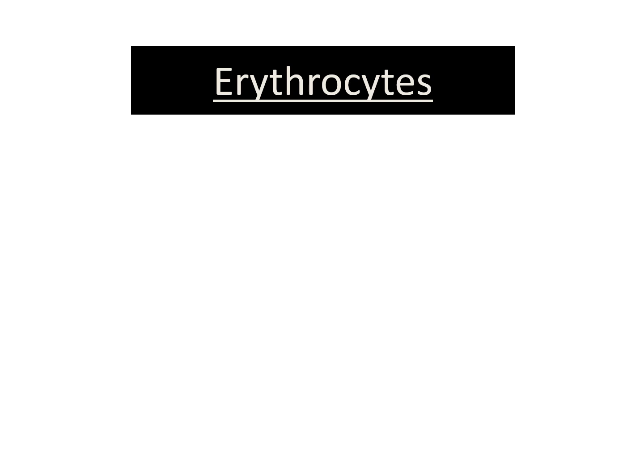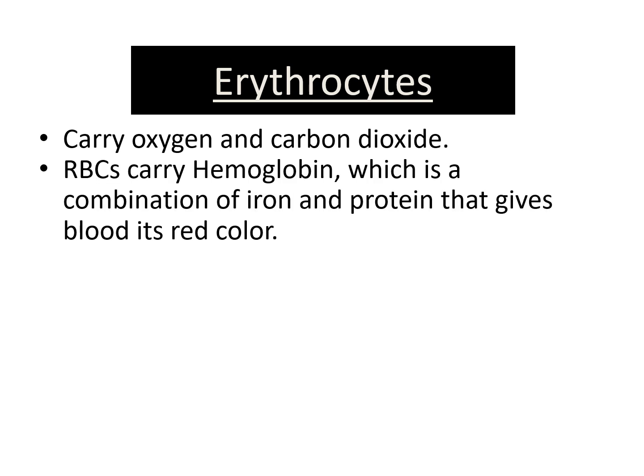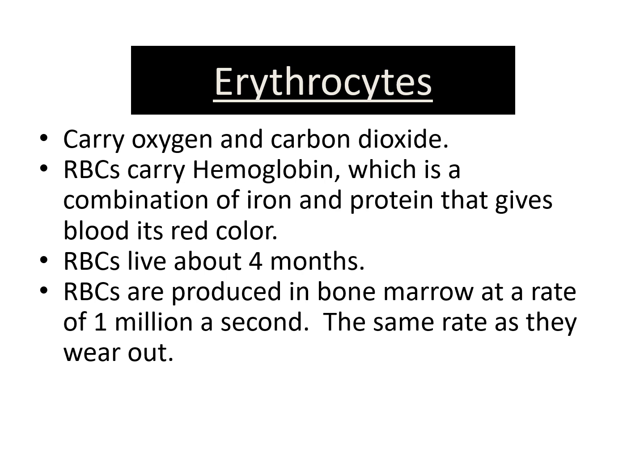Let's talk about erythrocytes or red blood cells. Red blood cells carry oxygen and carbon dioxide. RBCs also carry hemoglobin, which is a combination of iron and protein that gives blood its red color. RBCs live about four months, and they are produced in the bone marrow at a rate of 1 million a second — the same rate as they wear out.